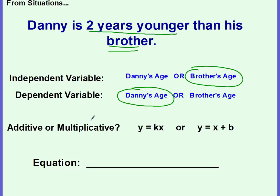Is this additive or multiplicative? Because he's younger, this means we're subtracting, which makes it an additive. And which equation would we use? This one right here. So let's write it. Y is going to equal, and Y is Danny's age. Danny's age is going to equal X, which is the independent variable, his brother's age, minus the two. And there's your equation.